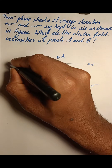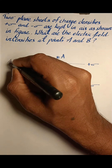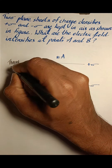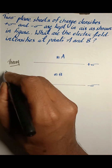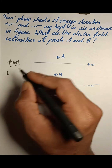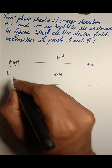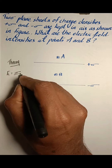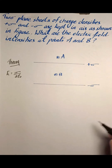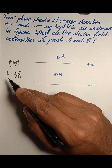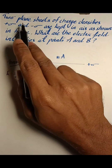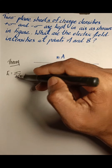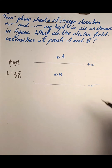Let us first discuss the theory for this question. The electric field due to a charged sheet is sigma by two epsilon zero. So the electric field produced by a sheet of charge is given by sigma by two epsilon zero.